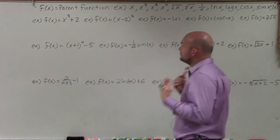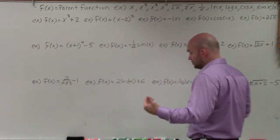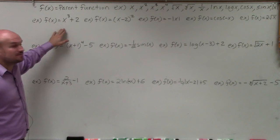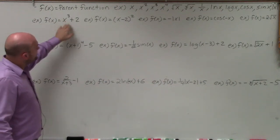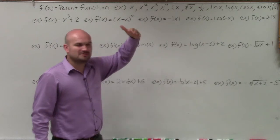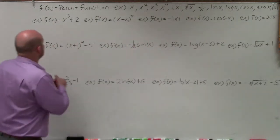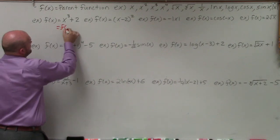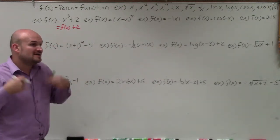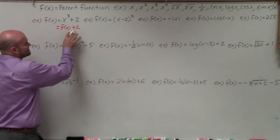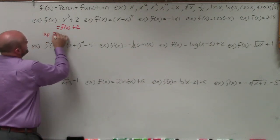So let's get into it. The first couple I'm going to break down closely, then I'll speed up. As you can see, I have f of x equals x cubed plus 2. The parent function is x cubed. By adding 2, I'm adding outside the function — it's f of x plus 2. Since I'm adding to the outside, that's a vertical transformation, and since I'm adding, that's up 2 units.